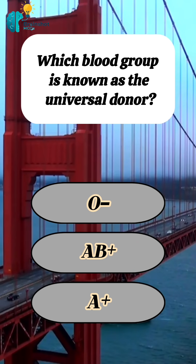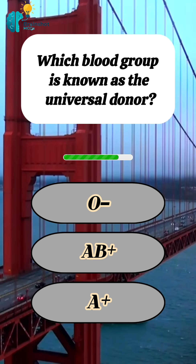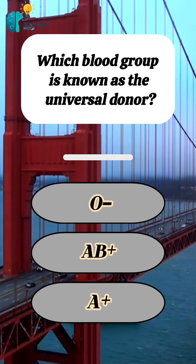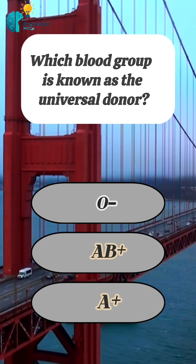Which blood group is known as the universal donor? Correct answer: O.